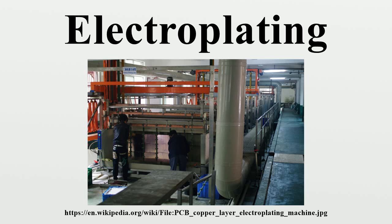The most common industrial test for cleanliness is the water break test, in which the surface is thoroughly rinsed and held vertical. Hydrophobic contaminants such as oils cause the water to bead and break up, allowing the water to drain rapidly. Perfectly clean metal surfaces are hydrophilic and will retain an unbroken sheet of water that does not bead up or drain off. ASTM F22 describes a version of this test. This test does not detect hydrophilic contaminants, but the electroplating process can displace these easily since the solutions are water-based. Surfactants such as soap reduce the sensitivity of the test and must be thoroughly rinsed off.